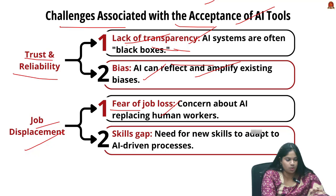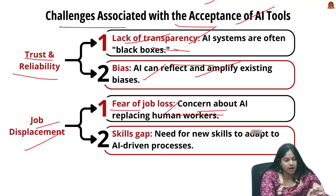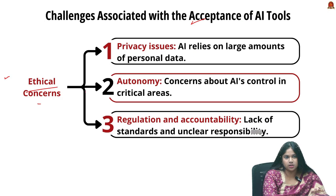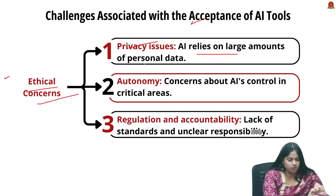Next is job displacement — many people worry that AI will replace human workers, especially in sectors like manufacturing, customer service, and even professional jobs like legal work. The skills gap is also a concern, as the shift towards AI-driven processes requires new skills and many workers may not be able to adapt quickly.